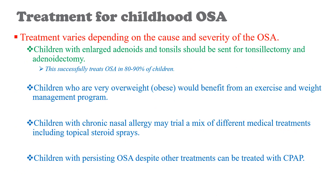Treatment varies depending on the cause and severity of OSA. Children with enlarged adenoids and tonsils should be referred for tonsillectomy and adenoidectomy. This procedure is successful in treating OSA in 80–90% of children. Children who are obese would benefit from exercise and weight management programs. Children with chronic nasal allergy may try medications such as topical steroid spray. Children with persistent OSA despite other treatments can be treated with CPAP — continuous positive airway pressure — or oxygen administration. CPAP maintains positive airway pressure that prevents closure of the airway during breathing.